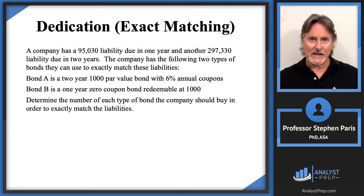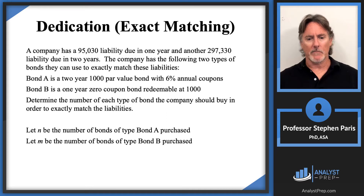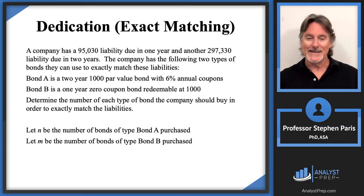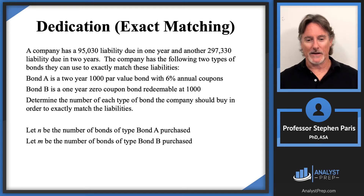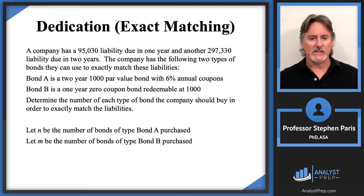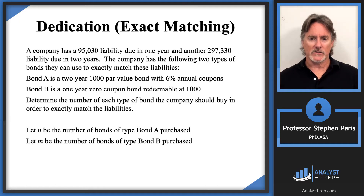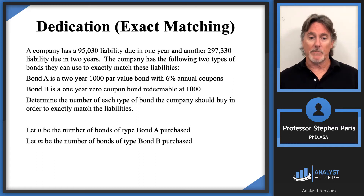We introduce variables: let n be the number of Bond A's purchased and m be the number of Bond B's purchased. On our timeline, the liabilities are $95,030 at time one and $297,330 at time two. Bond A is a two-year 6% annual coupon bond, and Bond B is a one-year zero coupon bond.